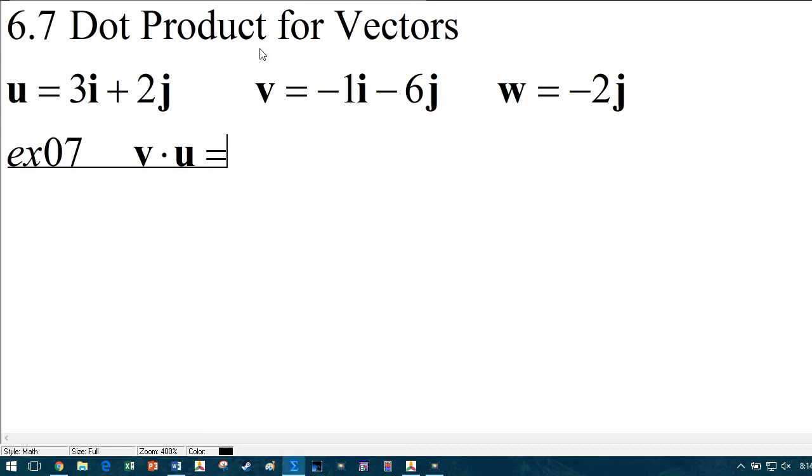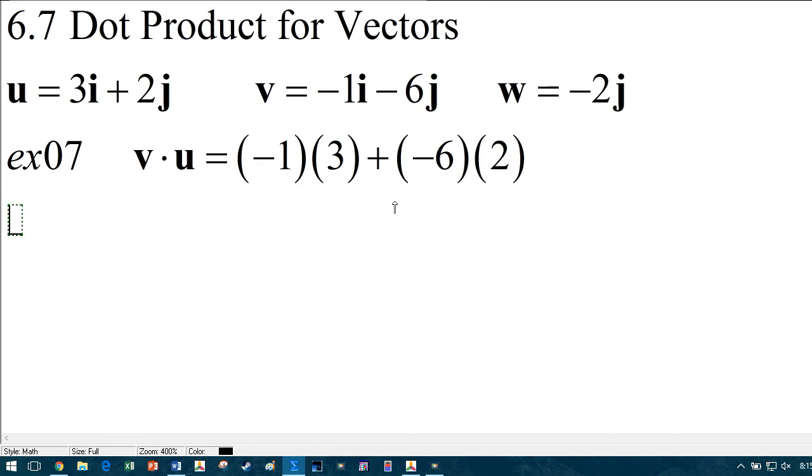So to do the dot product, all right, check this out. All I do is I take what's in front of i on both of them and I multiply. So I'm going to do negative 1 times 3 here. So negative 1 times 3, and then I put plus, and I multiply the coefficients of j, the two b values. So plus negative 6, not just 6, but negative 6. Negative 6 times 2. So negative 6 times 2. And then I just do some simplifying. So we get -3 + (-12) = -15. And there's the dot product.